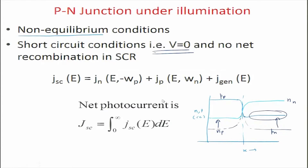Finally, we were looking at the p-n junction under illumination, where we said that you have a semiconductor device with zero voltage applied and there is no net recombination in the space charge region. However, you have a lot of generation. As a result, you have large generation current within the space charge region at zero bias. The total current is now equal to electron current at −Wp plus hole current at +Wn plus the generation current. Generation current dominates over recombination, so there is no space charge limited current at zero bias.